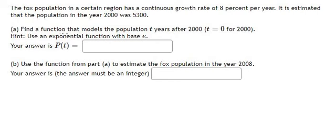Part A: find a function that models the population T years after 2000. We put T equal to 0 for 2000. We need to find the function.